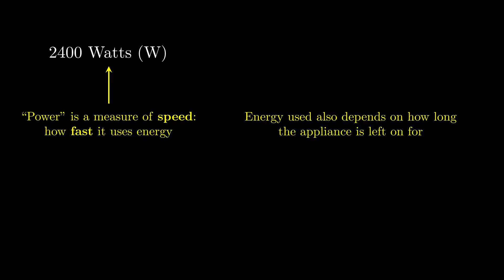So say for example I use this heater for three hours. In these calculations, time will almost always be measured in hours, and we just multiply those two. It's a bit like speed multiplied by time, except this time it's a speed in terms of how fast my appliance is using energy. So you multiply those two, we get 7200.